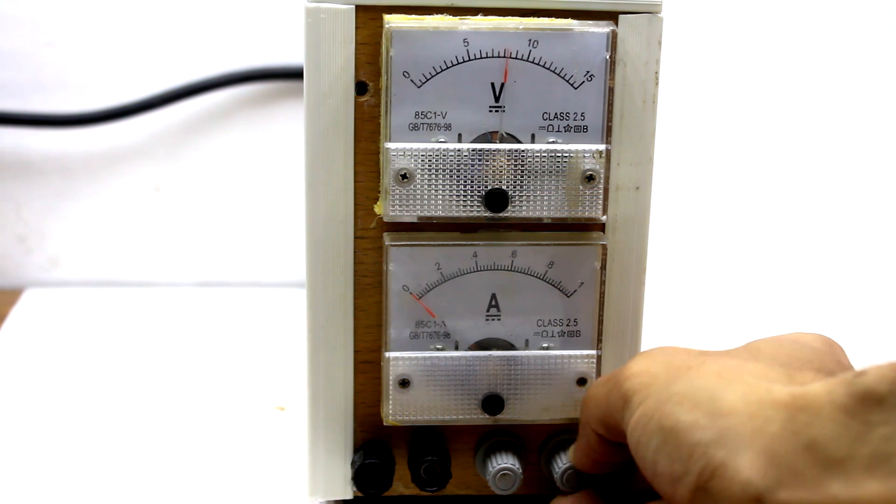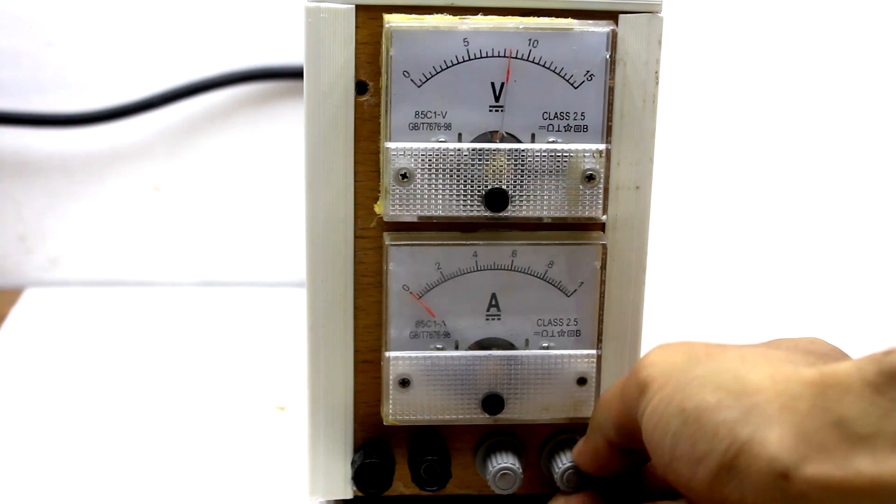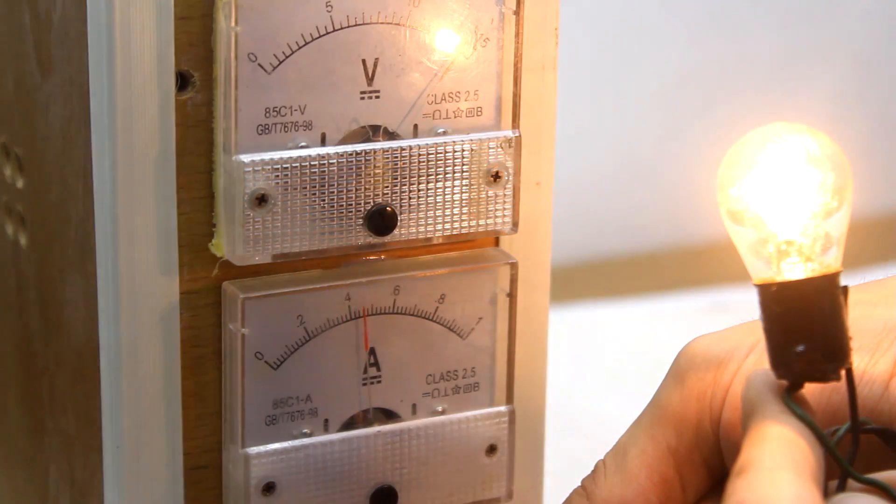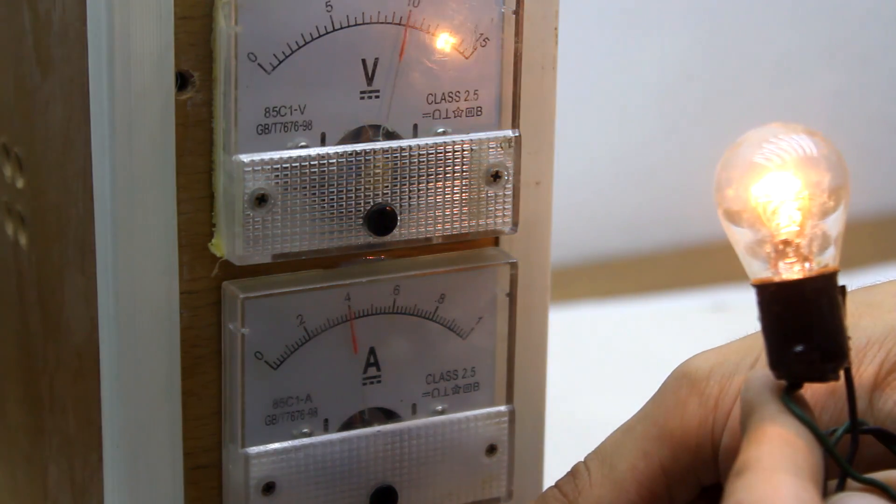With a regulated power supply you can test homemade constructions with different supply voltages. This power supply can give the load current up to 1 Ampere. I assure this is enough for most radio amateurs' needs.